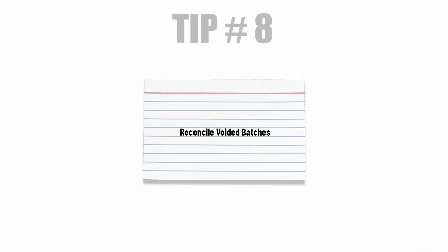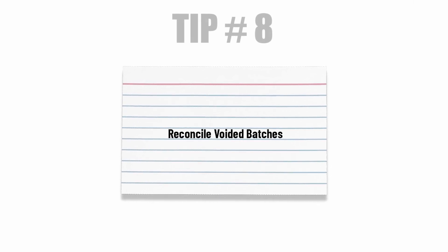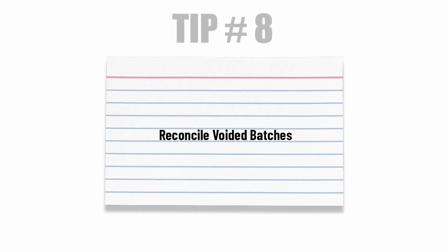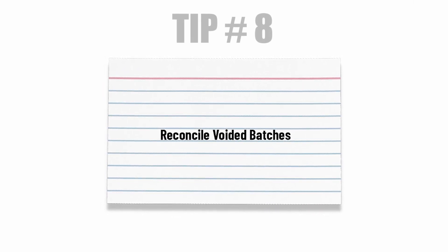Tip number 8: Before closing your month end, review your Export General Ledger page to determine if there are voided transactions in previously exported batches. If so, research voided transactions in LOU to make appropriate journal entry updates in QuickBooks Online.